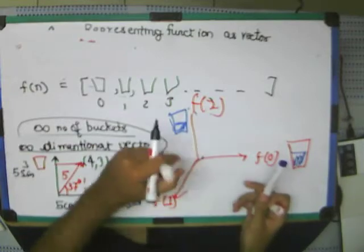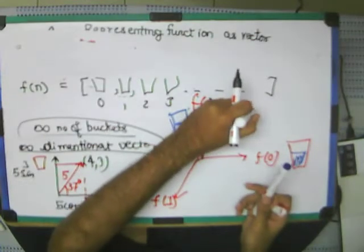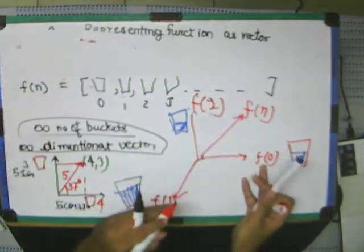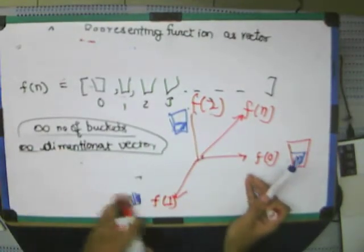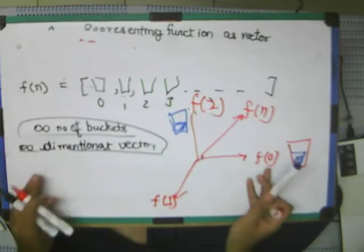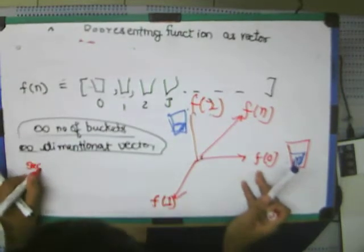And now, in this function, if I take some function f of n and what is the component in this bucket f of 0? To find the value of component, we need some selector function.